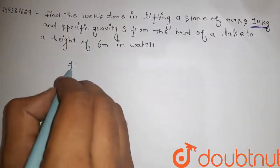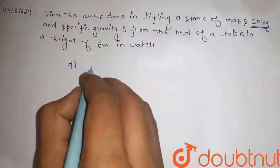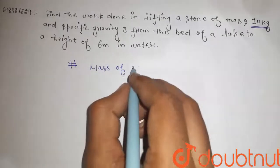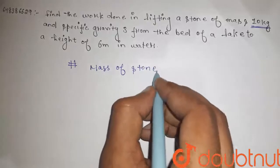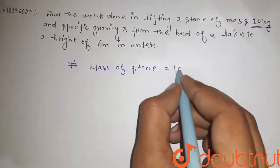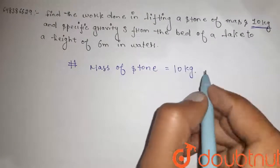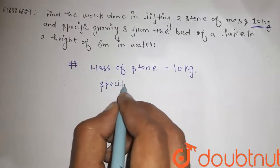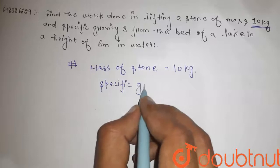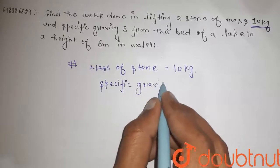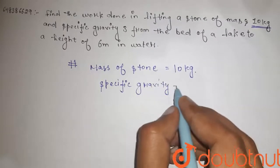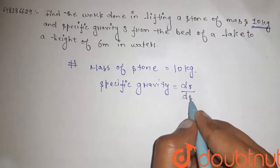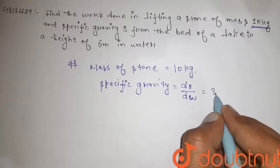So guys, here the mass of the stone, that is equal to 10 kg, and specific gravity, that is density of solid with respect to density of water, that is 3.